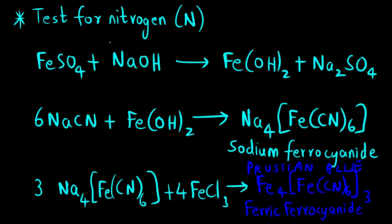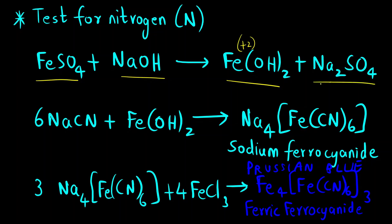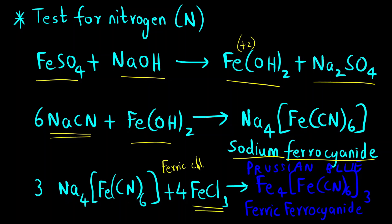First is the test for nitrogen. To the sodium fusion extract, we add ferrous sulfate and sodium hydroxide. We get ferrous hydroxide (Fe(OH)2) and sodium sulfate. This ferrous hydroxide then reacts with sodium cyanide present in the extract to form a complex called sodium ferrous cyanide. Then we add ferric chloride solution, which is light green in color.